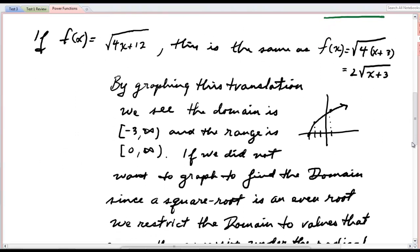So let me give you some questions like the kind you can expect. If f of x is the square root of 4x plus 12, this is the same as f of x equals, I'm factoring out the 4, the square root of 4 times x plus 3. And since that is a perfect square, I can pull that out. And we say that my original function is a translation and a stretch of our basic square root function.